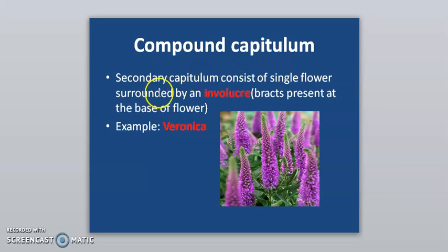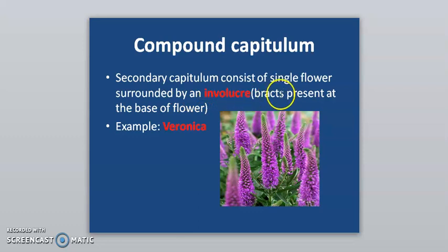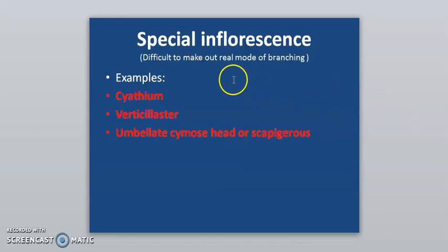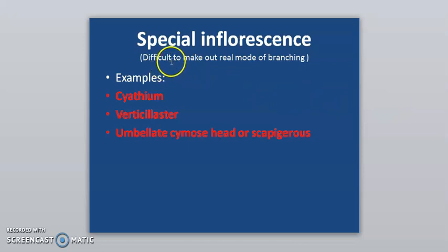In compound capitulum, the secondary capitulum consists of a single flower surrounded by an involucre of bracts present at the base of the flower — example is Veronica.